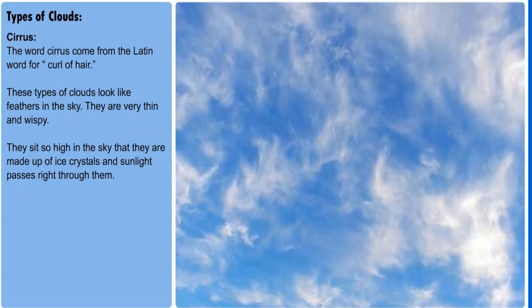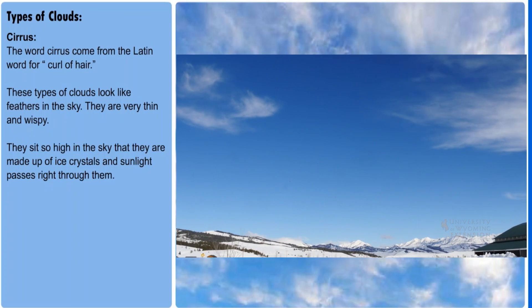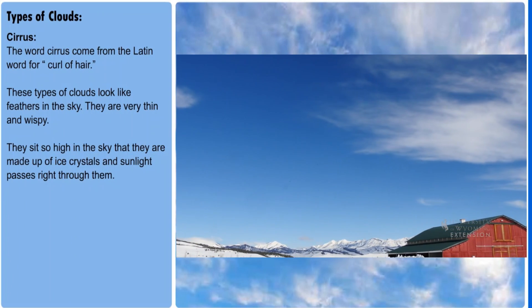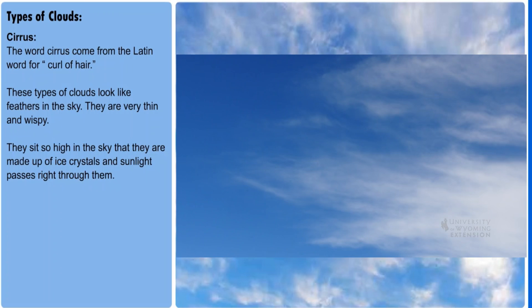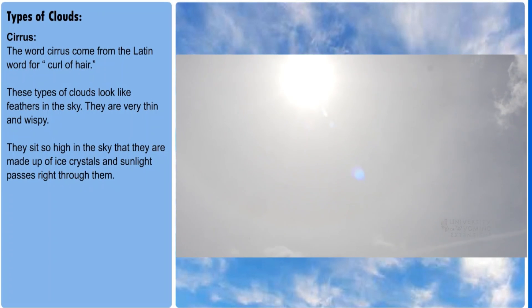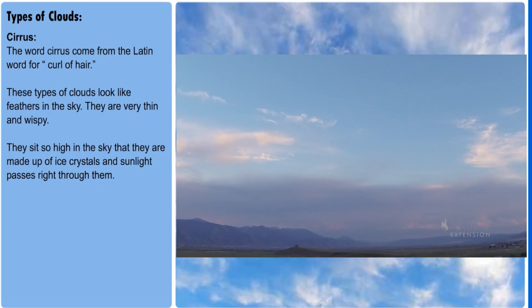Lastly, we have a type of cloud called cirrus. This actually comes from an old Latin word meaning curl of hair. These clouds form very high in the atmosphere, about 7000 metres, and they are wispy white in colour. They are so high in the atmosphere that they are made up of ice crystals, and the sunlight passes right through them, so they are normally quite hard to see. They usually indicate fair weather with no precipitation.